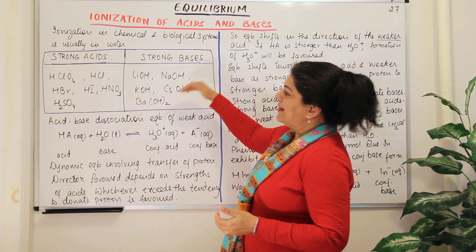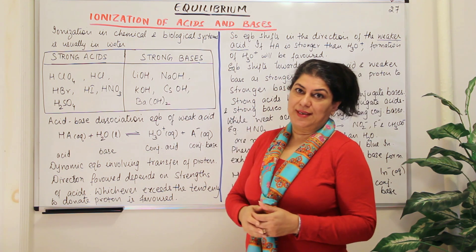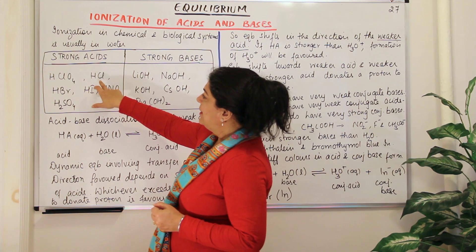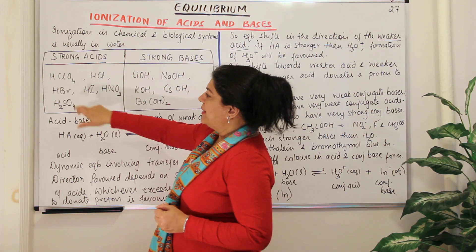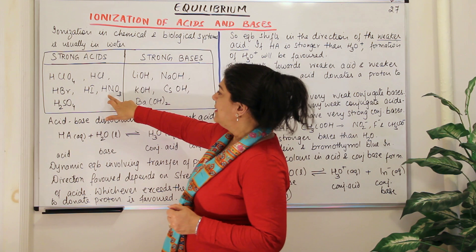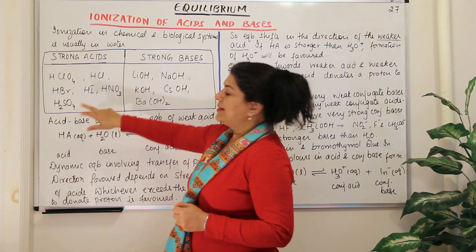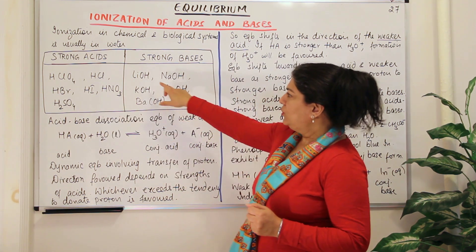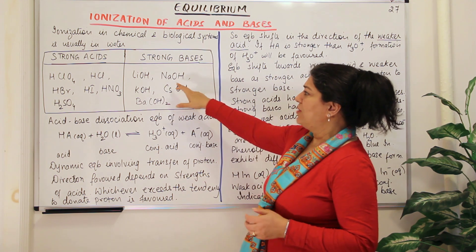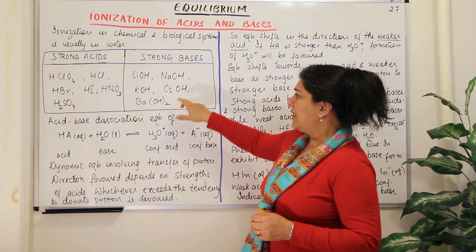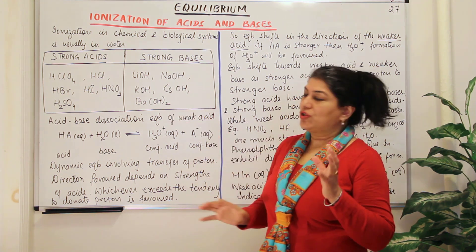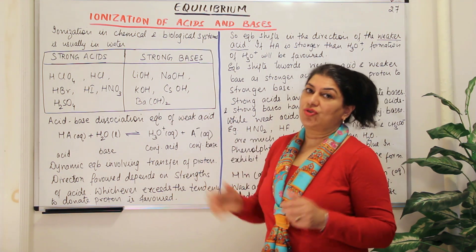I've listed out a few acids and bases here — strong acids and strong bases. Perchloric acid, hydrochloric acid, hydrobromic acid, hydroiodic acid, nitric acid, and sulfuric acid. You have lithium hydroxide, sodium hydroxide, potassium hydroxide, cesium hydroxide, and barium hydroxide. These are examples of strong acids and strong bases.